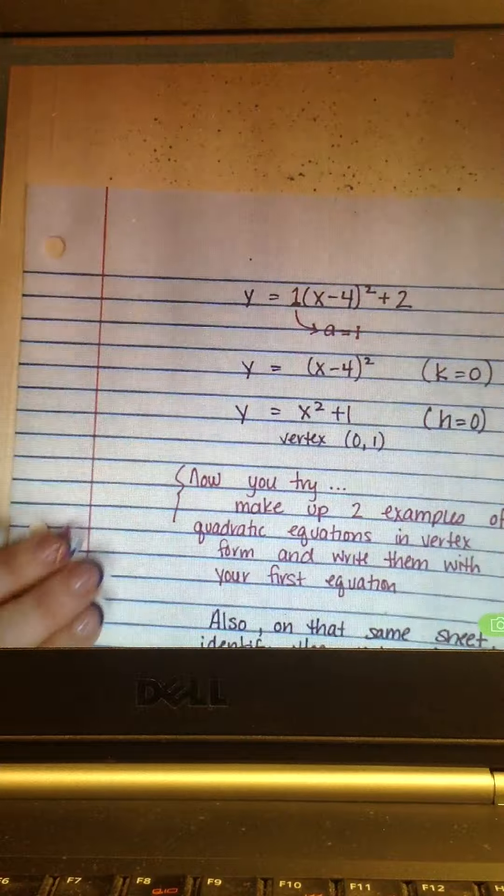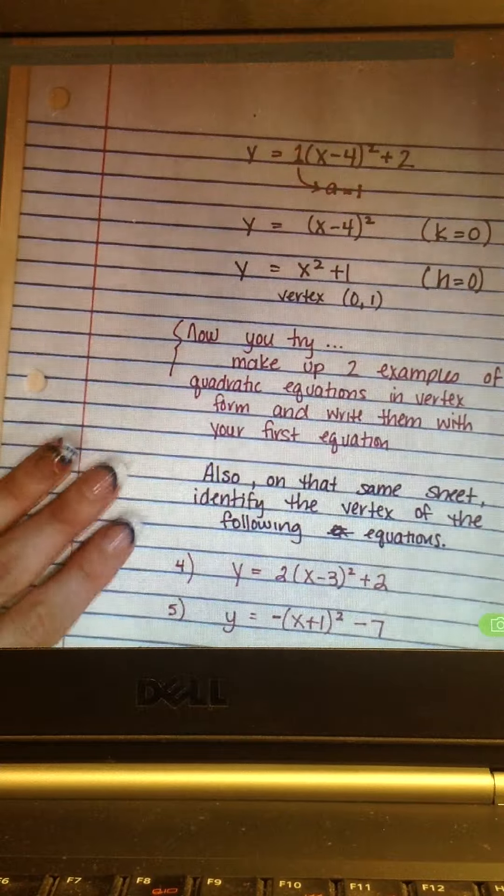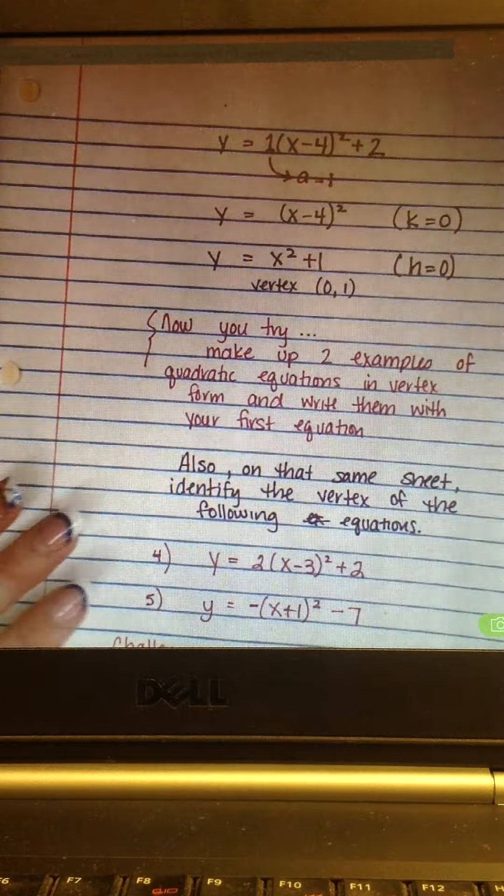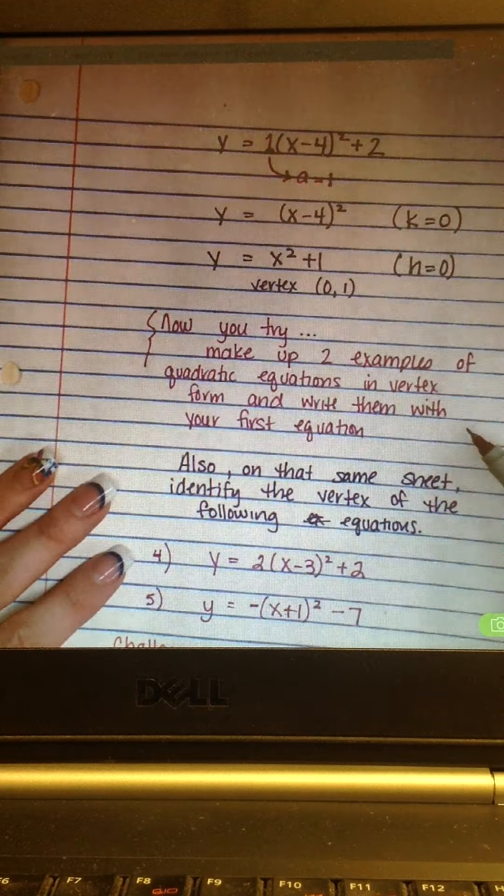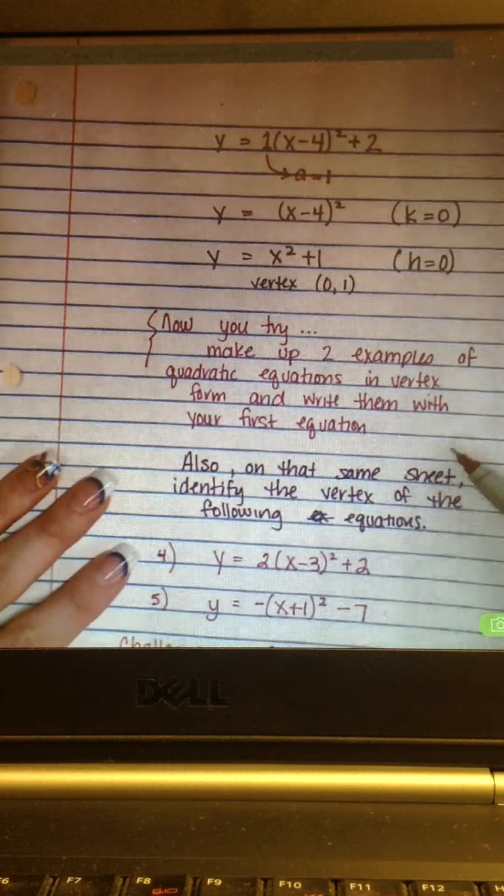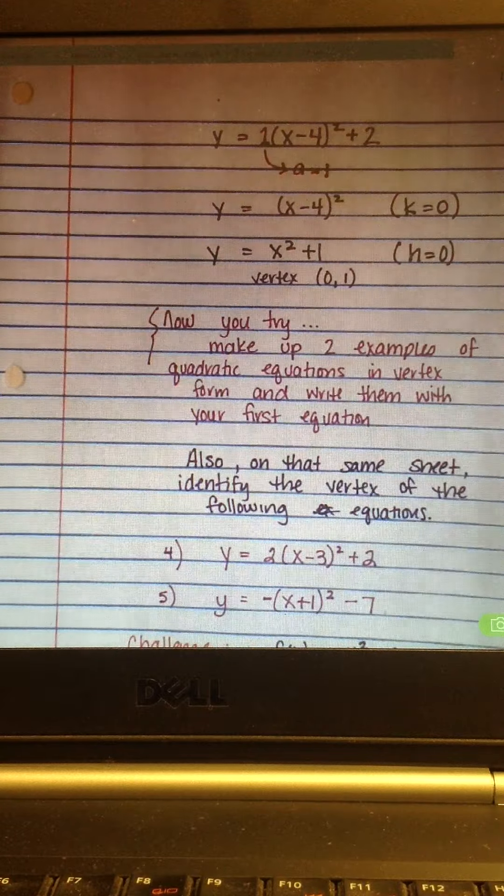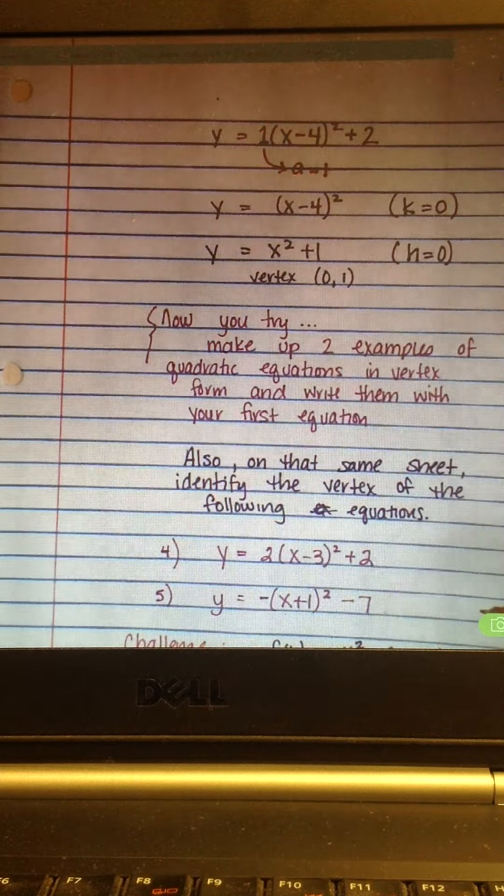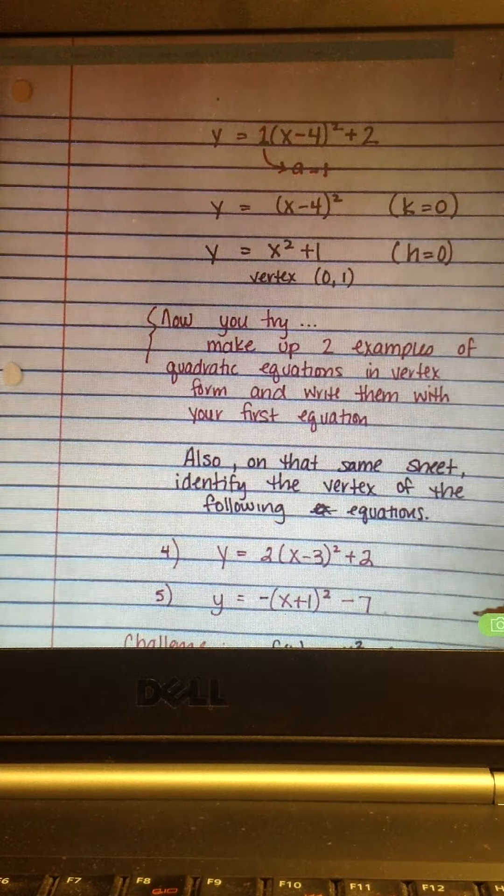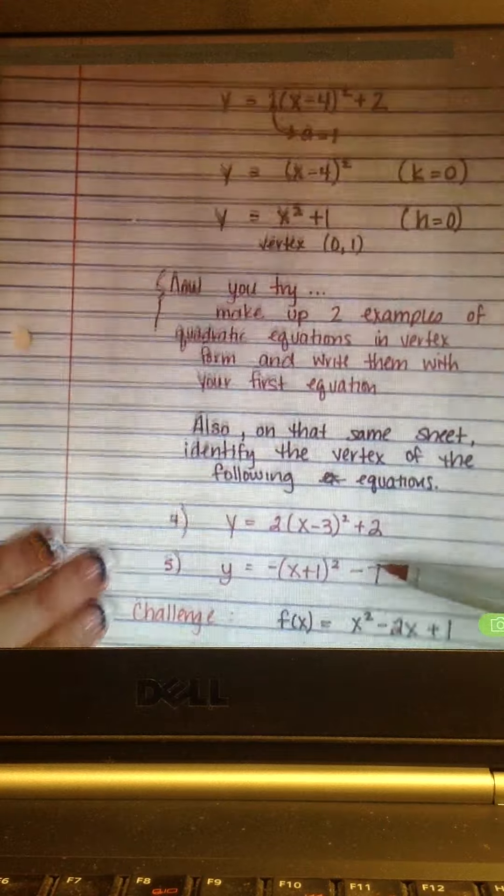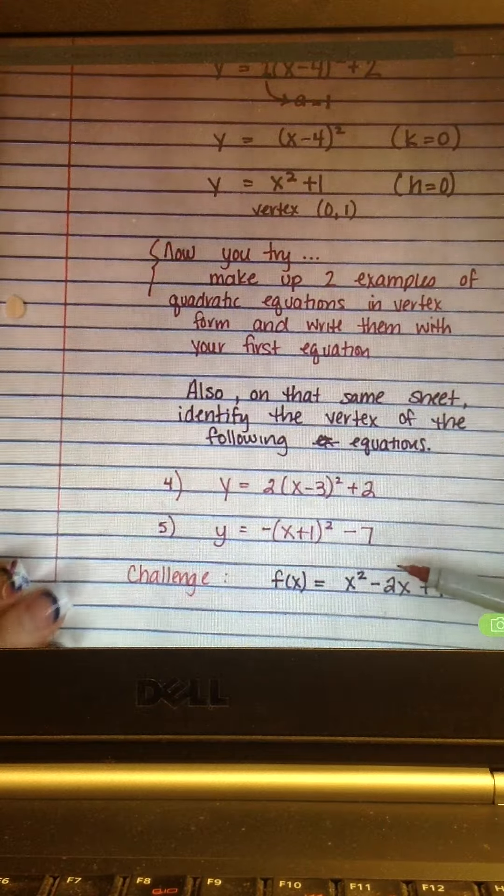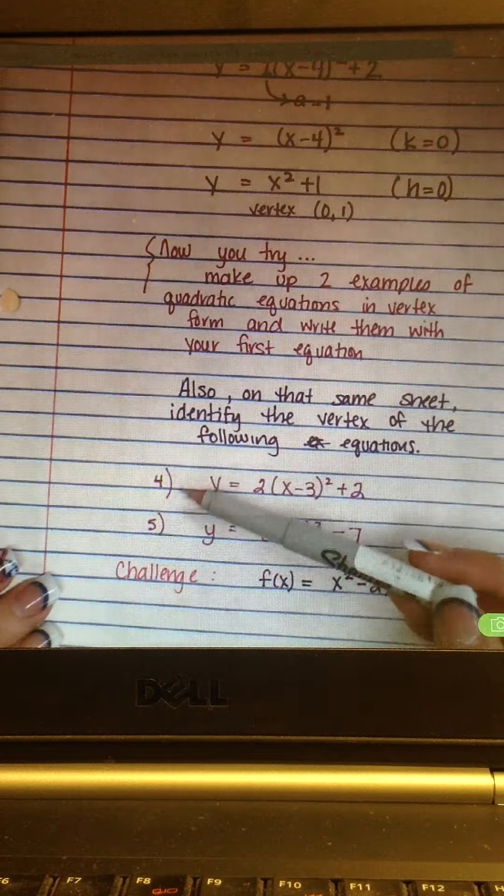So, I told you you'd have more opportunities to practice these. So, now I want you to try and make up two examples of quadratic equations that are in vertex form. Write them with your first equation. So, that first one was number 1. Let's let these two examples be numbers 2 and 3. When you're done doing that, I want you to take a look at these problems down here on that same sheet of paper.